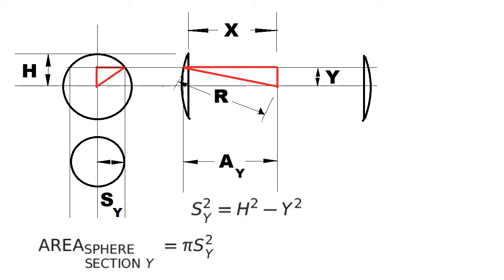This leaves us with the area of the cross section of the sphere in terms of h and y. But we've seen this before. That's the area of the annulus.